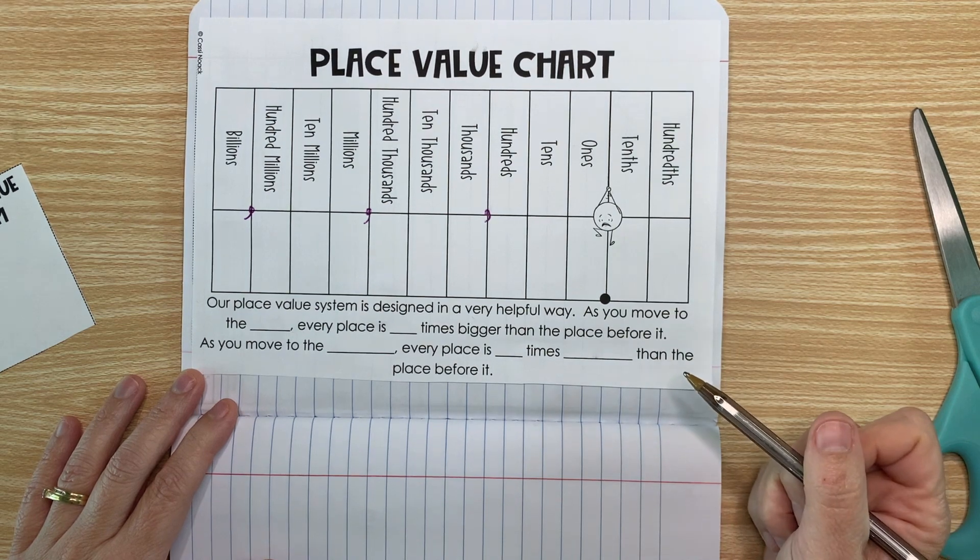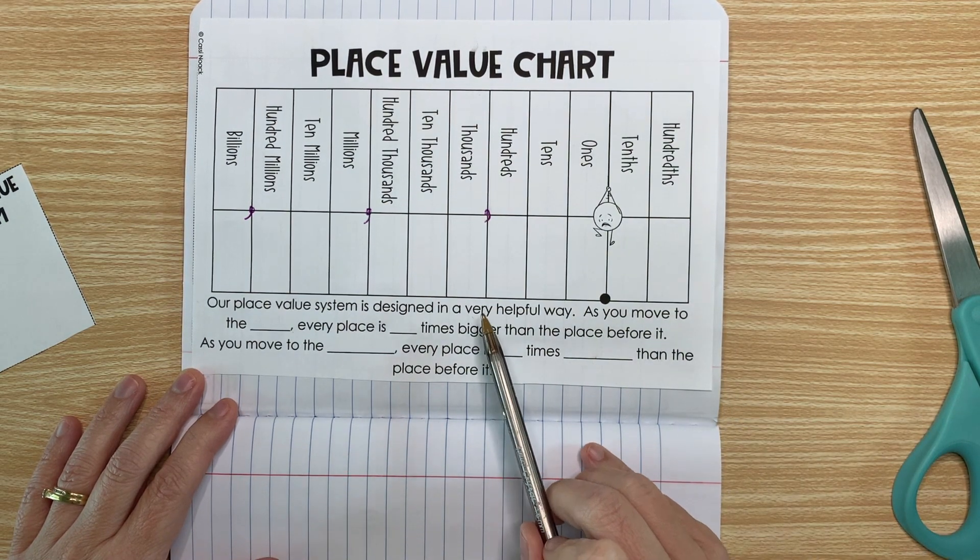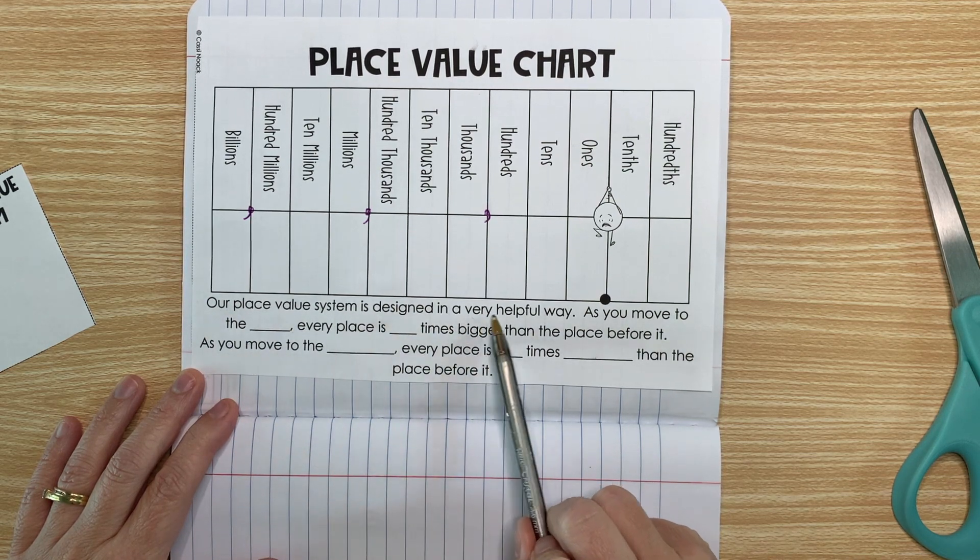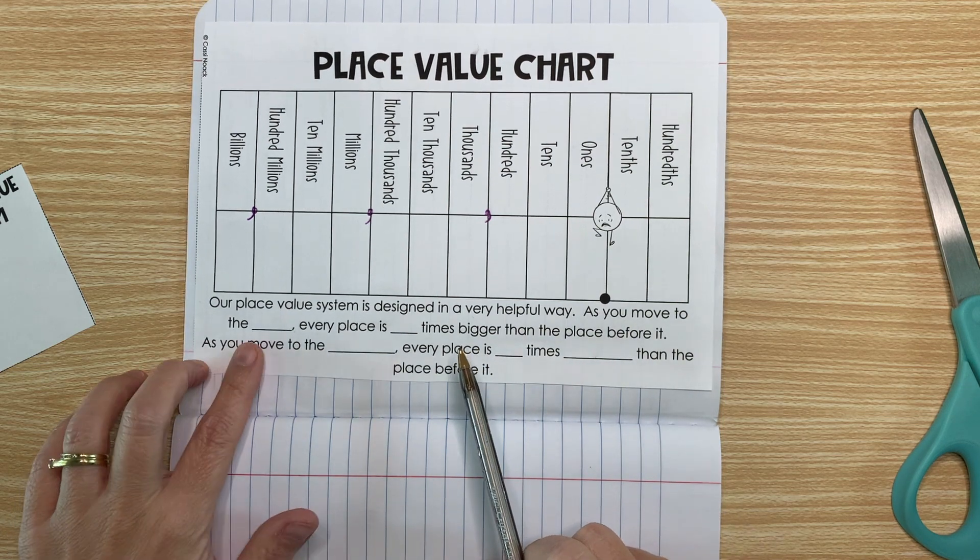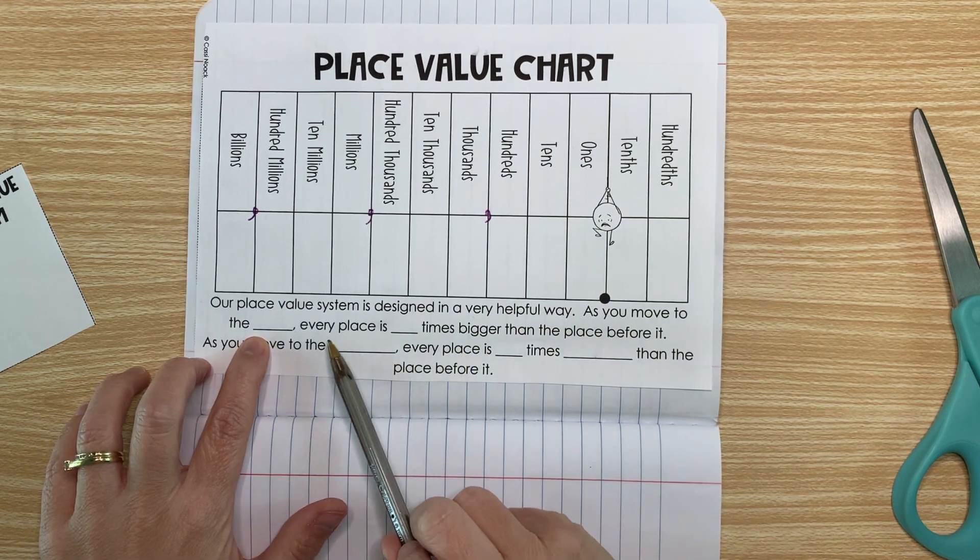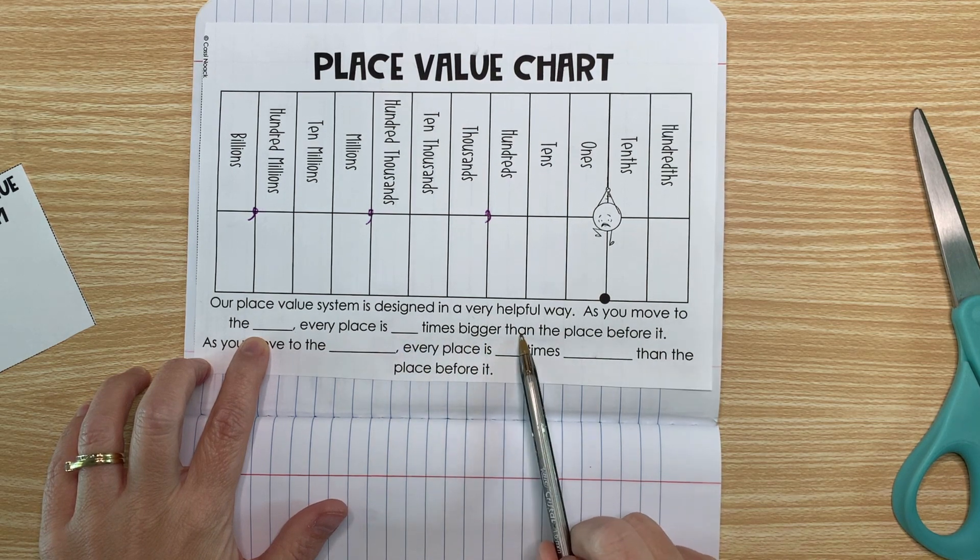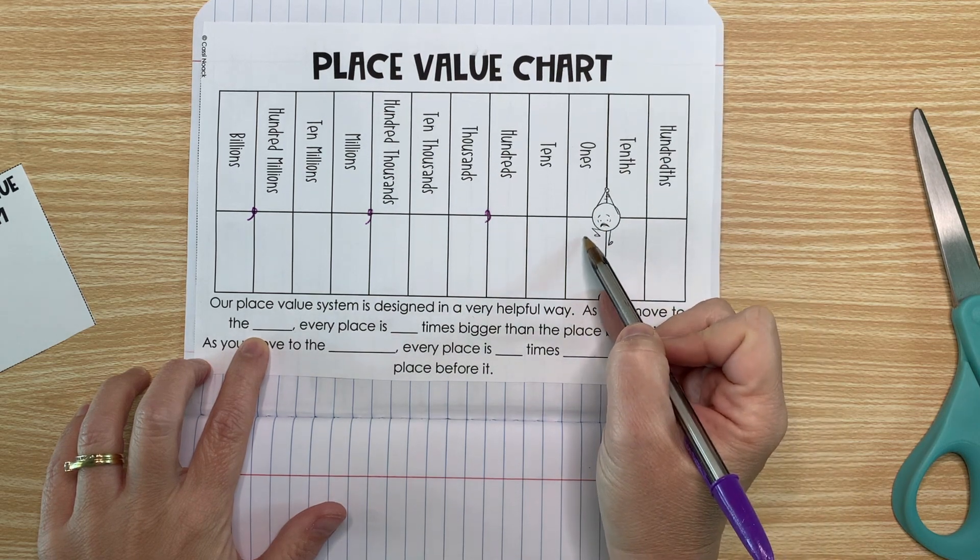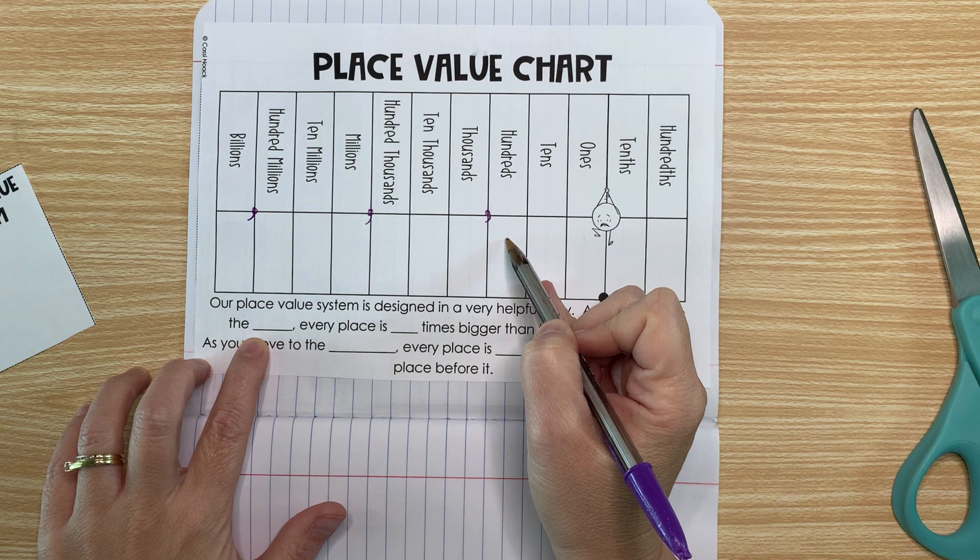So now this is the place value system that we can use to practice reading numbers. But we're going to talk about something special today. And that is how our place value system is designed. So it says our place value system is designed in a very helpful way. As you move to the left, every place gets bigger.